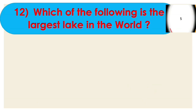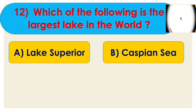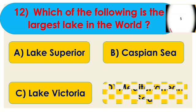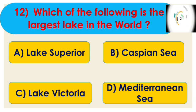Question number 12: which of the following is the largest lake in the world? Options are A. Lake Superior, B. Caspian Sea, C. Lake Victoria, and D. Mediterranean Sea. The right answer is Caspian Sea. Although its name is 'Sea', the Caspian Sea is in fact a lake, and it stretches across five different countries.